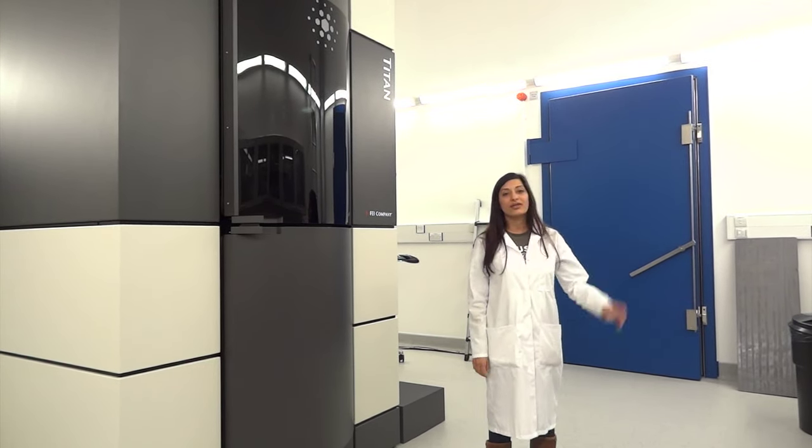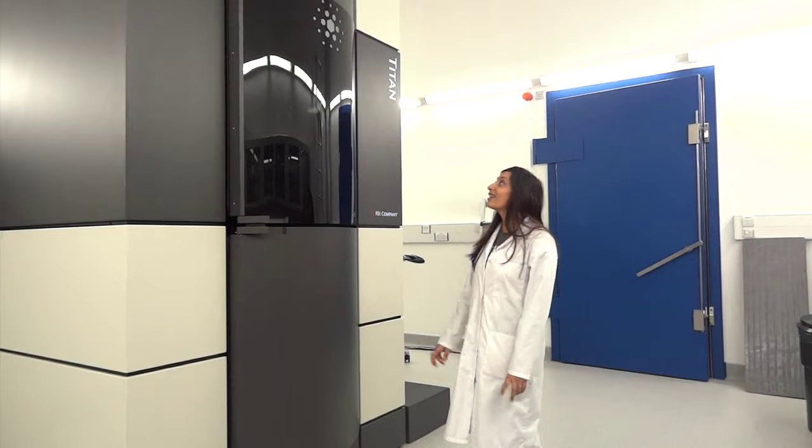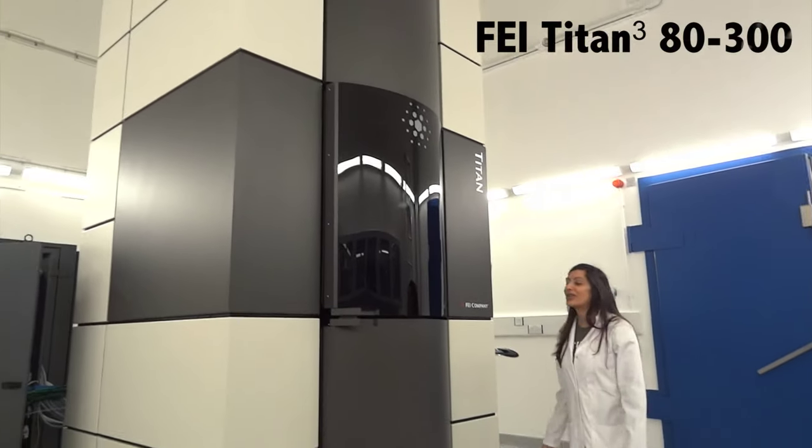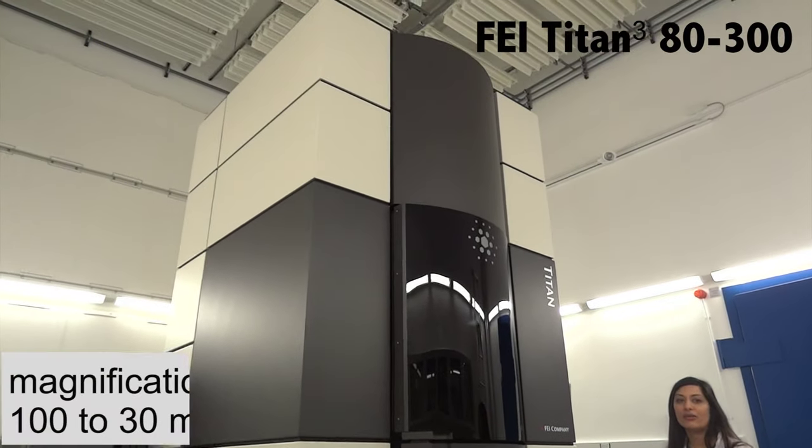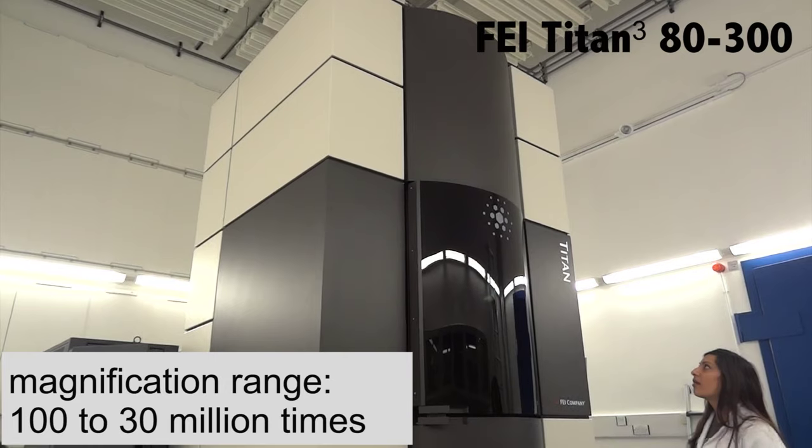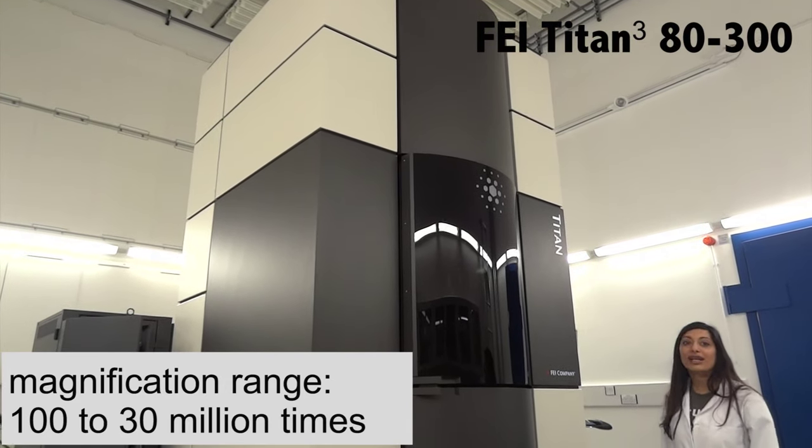An optical microscope can magnify a sample to about 50 times magnification and is small enough to sit on a lab bench. This enormous electron microscope is able to magnify our sample by about 30 million times.